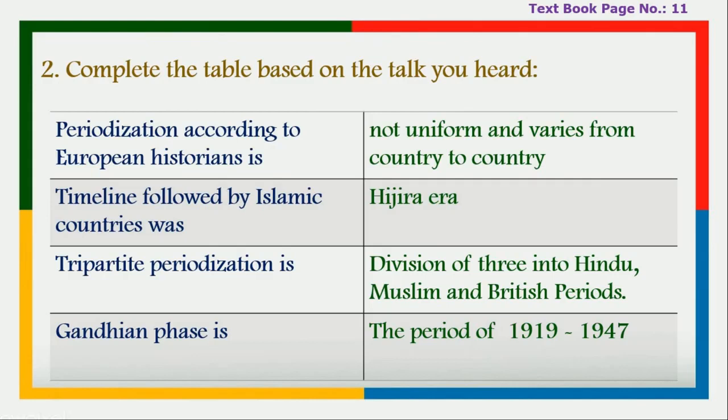Next, second exercise: complete the table based on the talk you heard. First, periodization according to European historians is not uniform and varies from country to country. Second, the timeline followed by Islamic countries was the Hijra era. Third, tripartite periodization is the division into three periods: Hindu, Muslim, and British. Fourth, the Gandhian phase covers the period of 1919 to 1947.